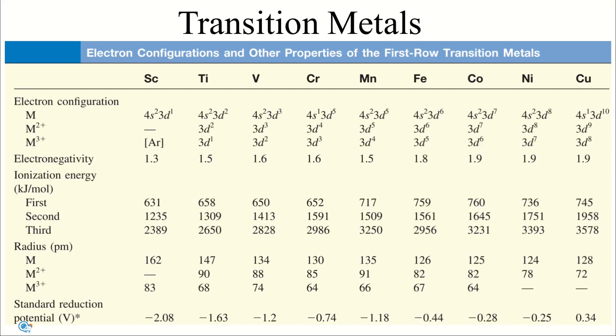The +3 oxidation state is more stable at the beginning of the series, whereas toward the end, the +2 oxidation state is more stable.